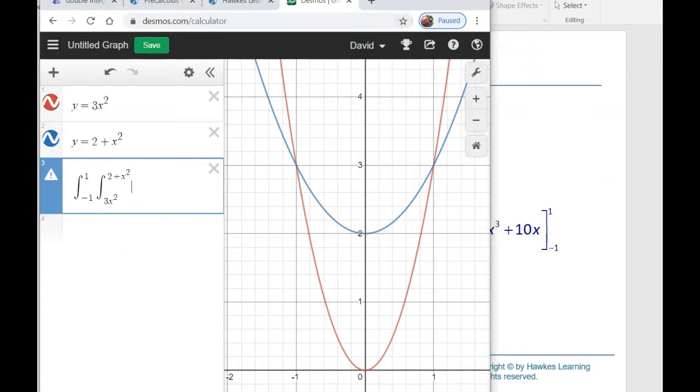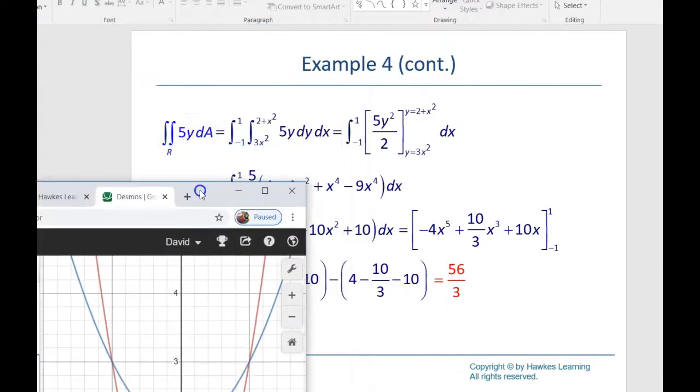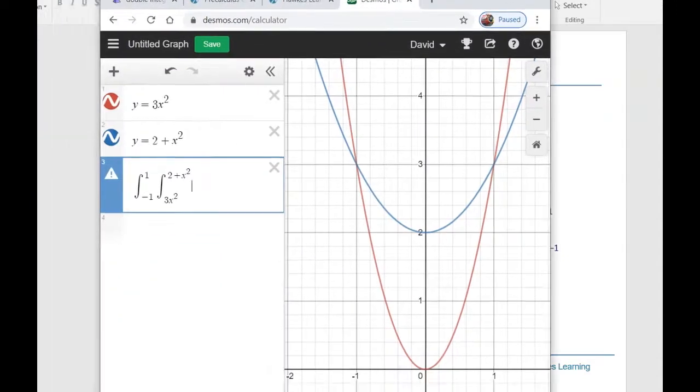Our function to find the volume under is 5y. That's our f(x,y) in the notation. We have to give it the order—dA doesn't work here, you have to specify. These are y's, so I'm going to use dy, and then these are x's, so I'll use dx, and it gives us an approximation.